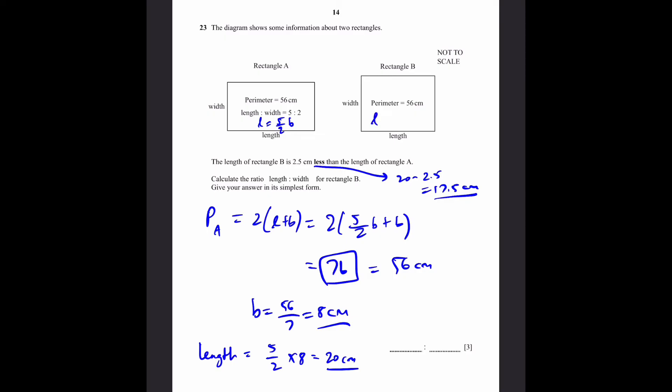Now, if the perimeter is 56 centimeters, that means the length plus the breadth is going to be equal to 56 by 2, 28 centimeters. And the length we know is 17.5. So the breadth is going to be equal to 17.5 subtracted from 28, which is equal to 10.5 centimeters. And now the ratio is going to be 17.5 is to 10.5 for length is to width. And we can simplify this to 35 is to 21 by multiplying by 2 and dividing both sides by 7, 5 is to 3.